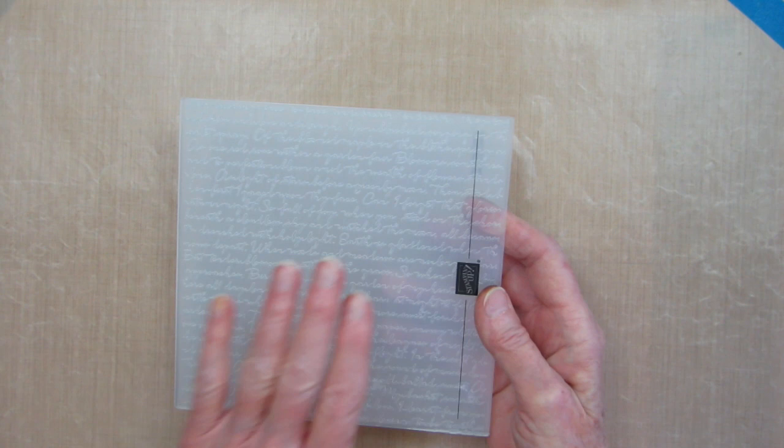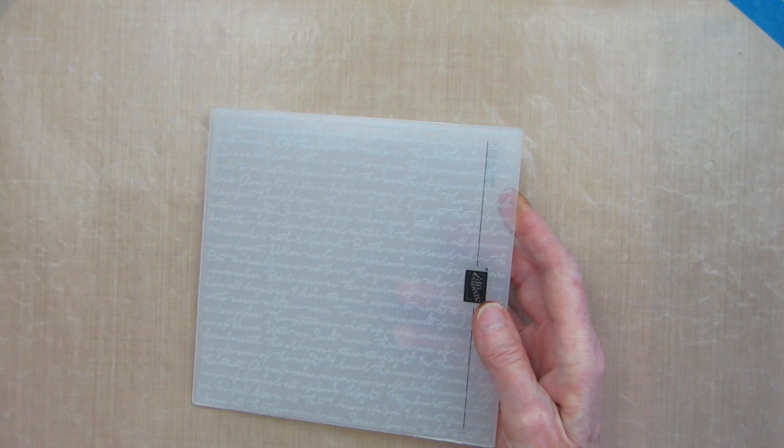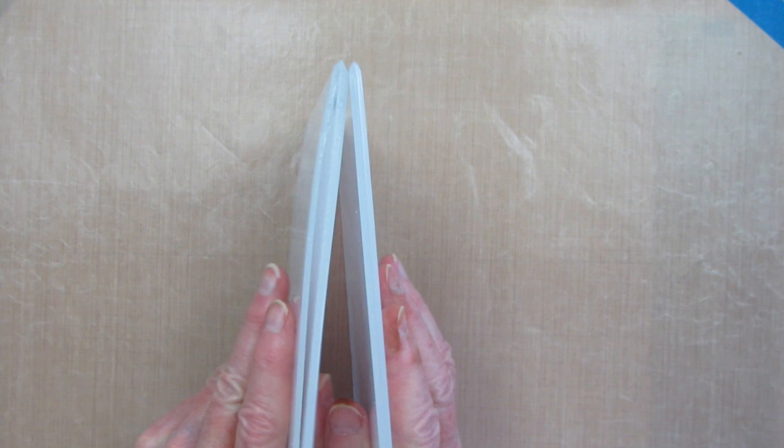Since Stampin' Up! is using a new manufacturer for dies and embossing folders, they've replaced the old dynamic embossing folders with ones that they're calling 3D embossing folders. They give the same deep impression that you're used to with the dynamic folders.